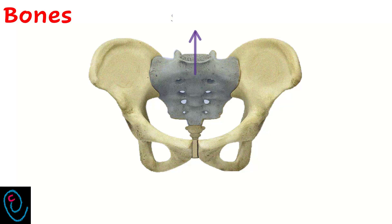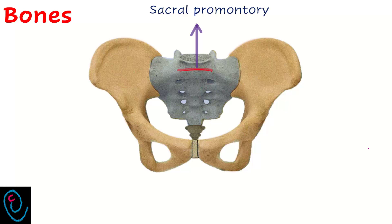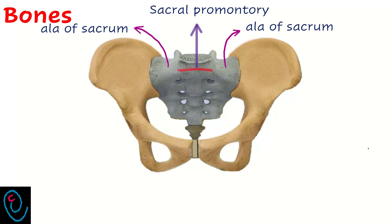The pelvis is formed of four bones: sacrum, coccyx, and two hip bones. The sacrum is a wedge-shaped bone made up of five fused bones. The prominent upper margin of the sacrum is called the sacral promontory. The sacrum has two wings known as alae of the sacrum. The coccyx is a small triangular bone that articulates with the sacrum.